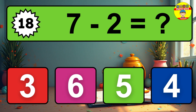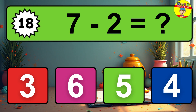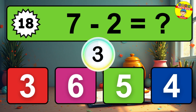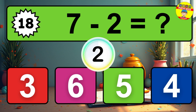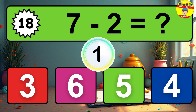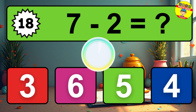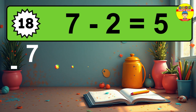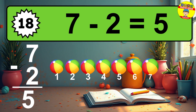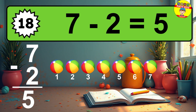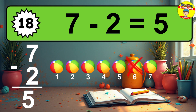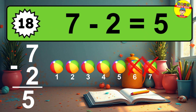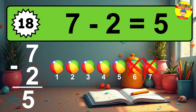Question 18. 7 minus 2 equals what? So the answer is 7 minus 2 is 5. Let's count it. 1, 2, 3, 4, 5.